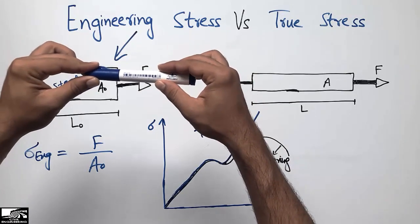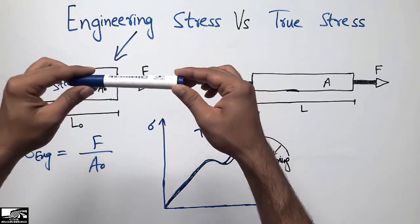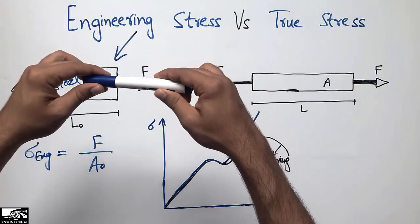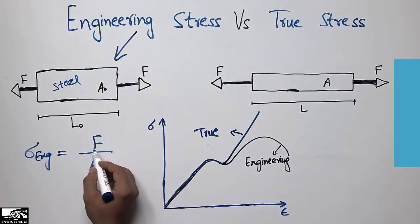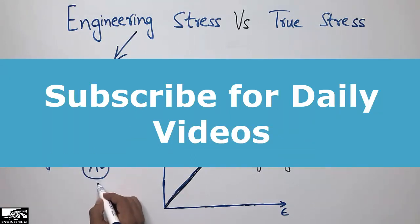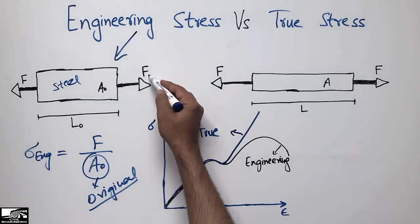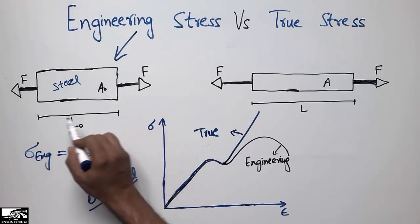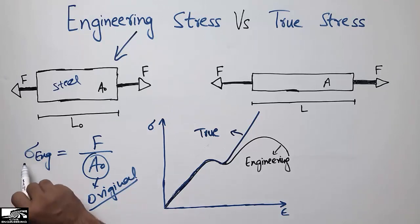In engineering stress, we take the original area of the object — we don't take the reduced area. So the engineering stress equals the applied tension force divided by the original area of the object. The original length of the object is also taken in the engineering stress analysis.